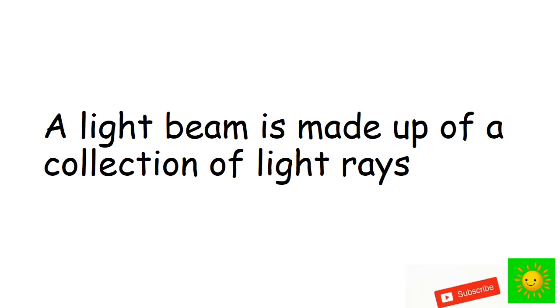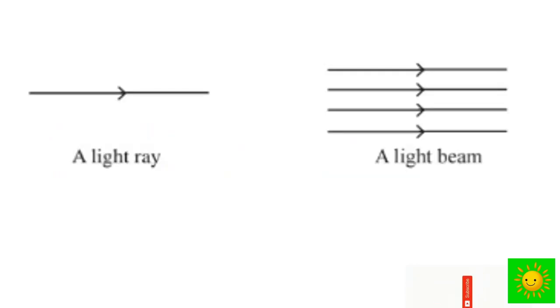You have seen the light beam which is emitted from a torch when it is switched on. We use several straight lines with arrow heads to show a light beam. Now you can see a light ray and light beam which we use to show light transmission.